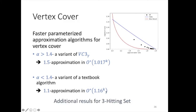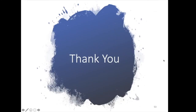We also have additional results for 3-hitting set. In general, the base of the exponent of the running time for an algorithm achieving an alpha-approximation ratio is shown as the red line. That's all for this talk — thank you for staying with me until the end. You're welcome to read the paper, and you're more than welcome to come to the poster session and ask questions or just talk.